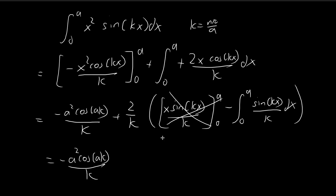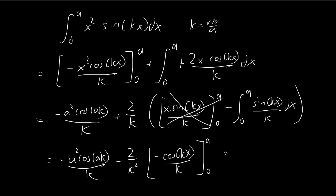Now here you have 2 divided by k squared — pulling these constants out. You're left with an integral of sine kx, which integrating gives negative cosine kx divided by k, evaluated from 0 to a. Substituting in the bounds, I can pull this other k out as well, so this becomes 2 divided by k to the power of 3. Then we have negative cosine ka plus 1, because cosine 0 is equal to 1, so you have minus negative 1, giving positive 1.